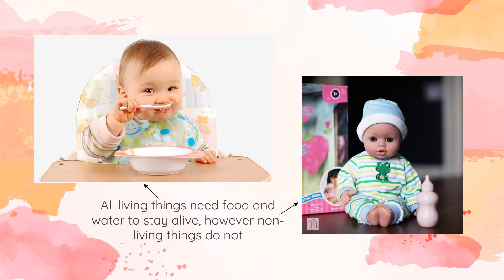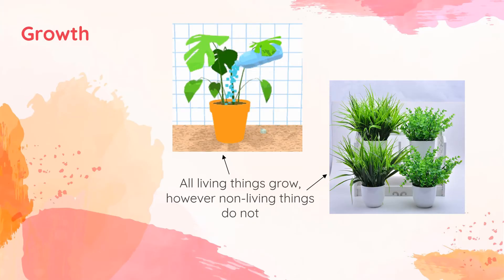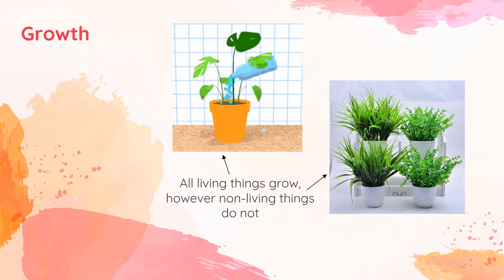These are seven examples that explain the differences between living things and non-living things. First, nutrition: all living things need food and water to stay alive. However, non-living things do not. Next is growth: all living things grow.